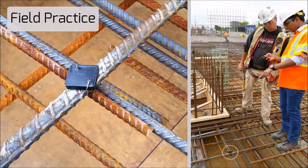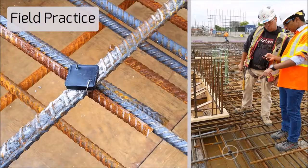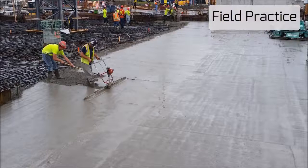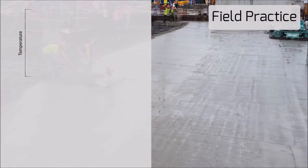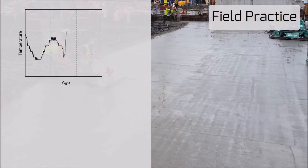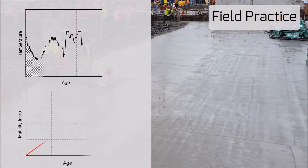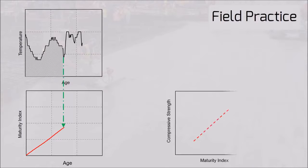In field practice, the temperature sensor is placed in different locations in the concrete element, selected based on the vulnerability of the element to failure at the time of removing formworks. Measurements can begin as soon as the concrete is placed in the formwork — known as the pouring time. Temperature variations are monitored during curing, and based on the temperature history and the known datum temperature, one can measure the maturity index at any given time. The maturity index is then used to predict the early age strength using the maturity-strength relationship for the specific mix.